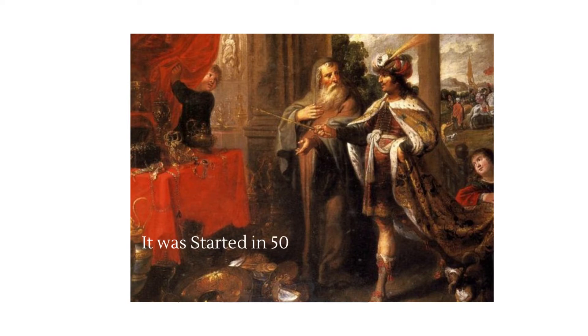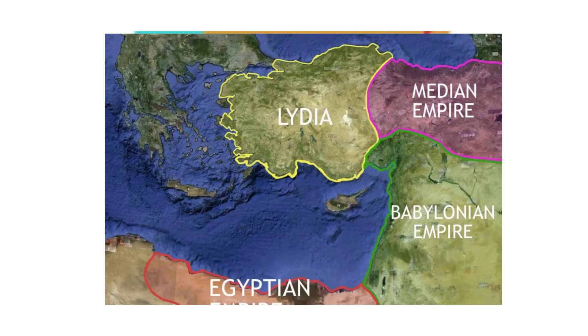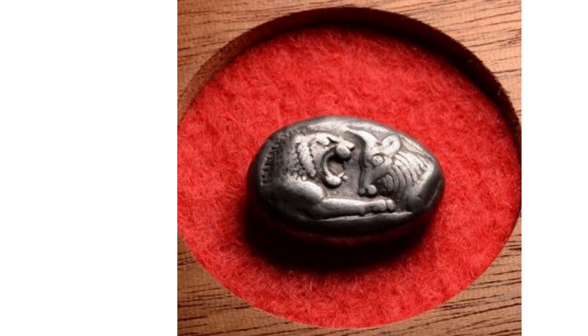This process was started in 500 BC by King Croesus of the Lydian Empire. He decided that in order to represent the true value of the coins issued by his kingdom, all the gold coins should be stamped by a bull or a lion symbol.